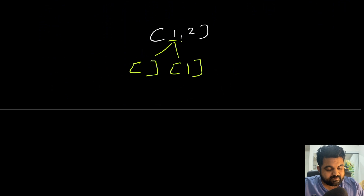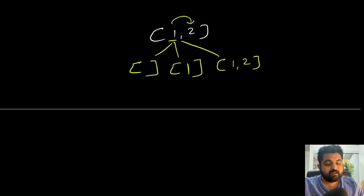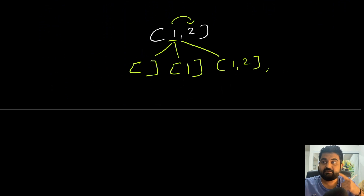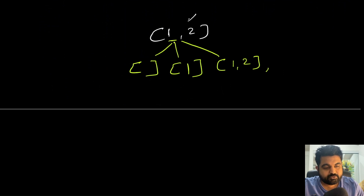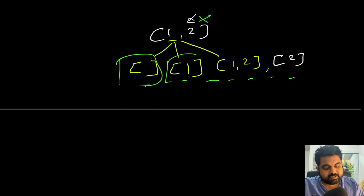Next, the element in the loop is two, so we have the same decision: include two or not. If we include two we get one and two. We also calculate the possibility by removing the previous value — if we remove one and include two we get just two. Once we reach the end of the loop we have no more options, giving us the correct set of all subsets.